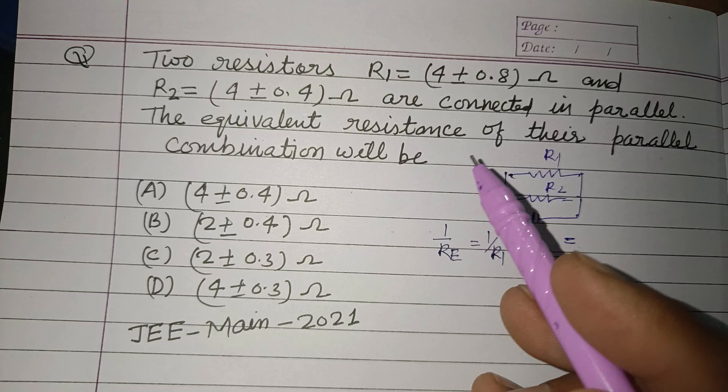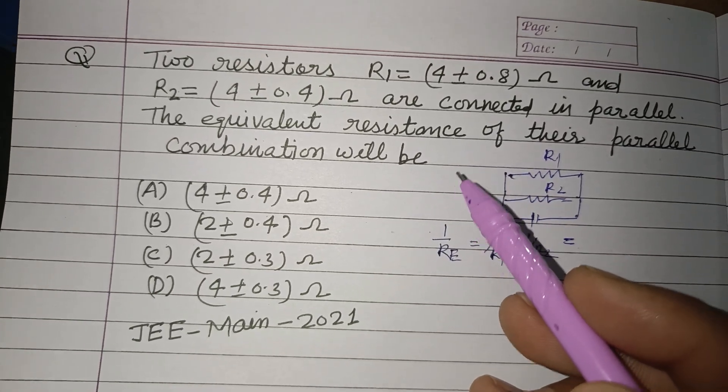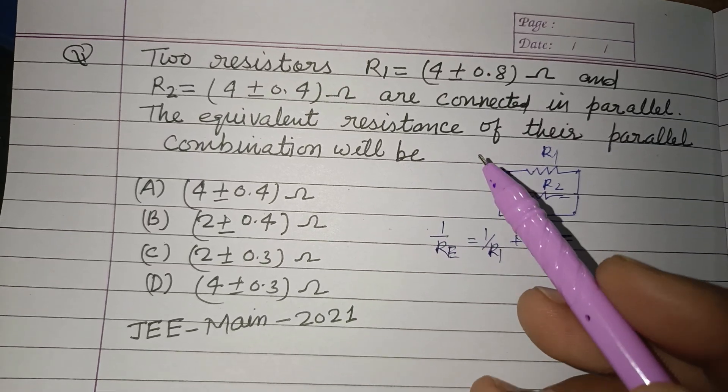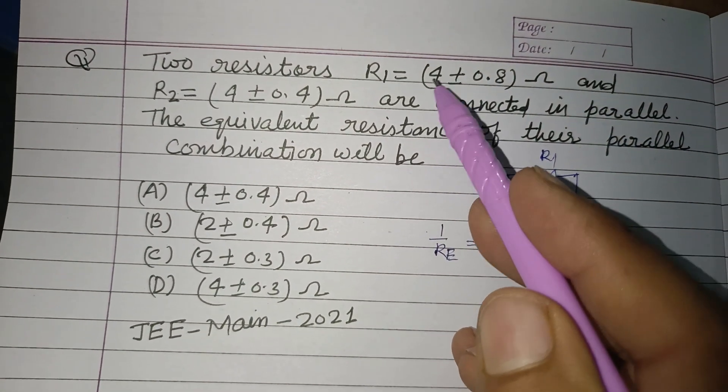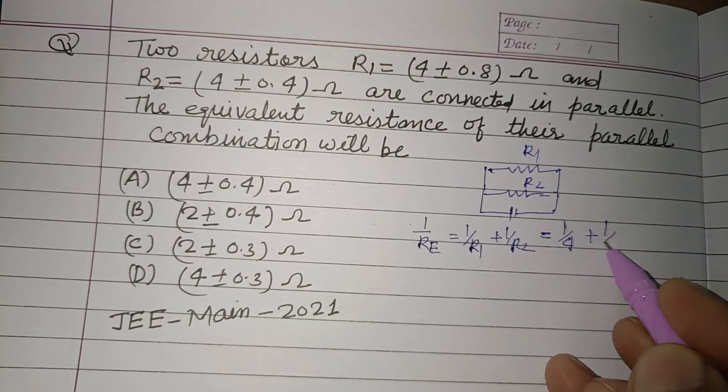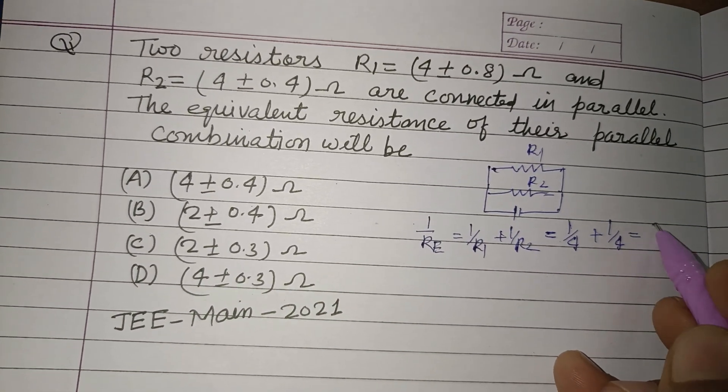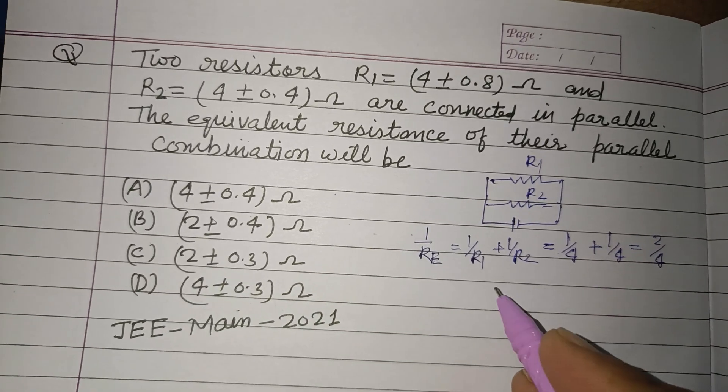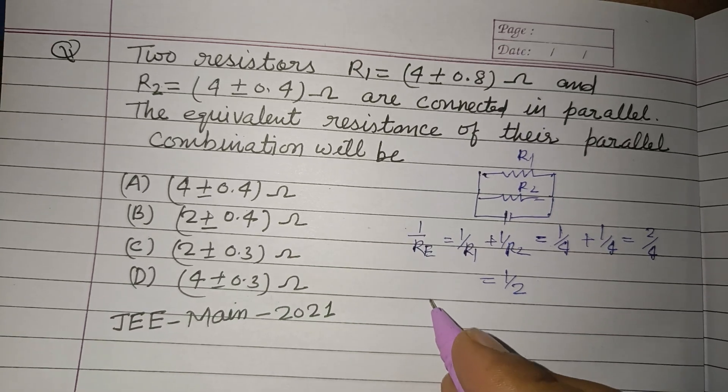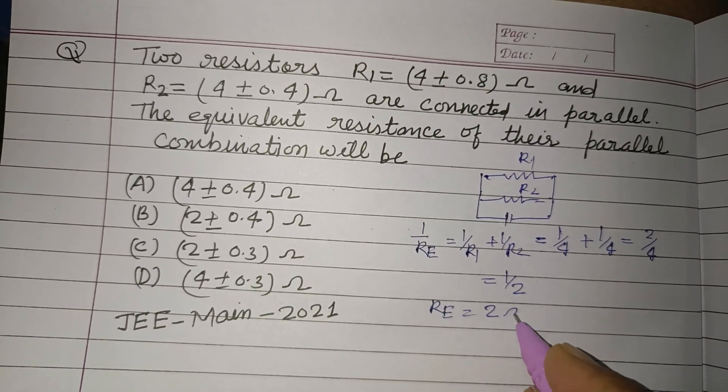When there is no percentage error or there is no error, the resistors are 4 and 4. So 1 upon 4 plus 1 upon 4 ohm, that is 2 upon 4, which is 1 by 2 ohm. So R equivalent is 2 ohm.